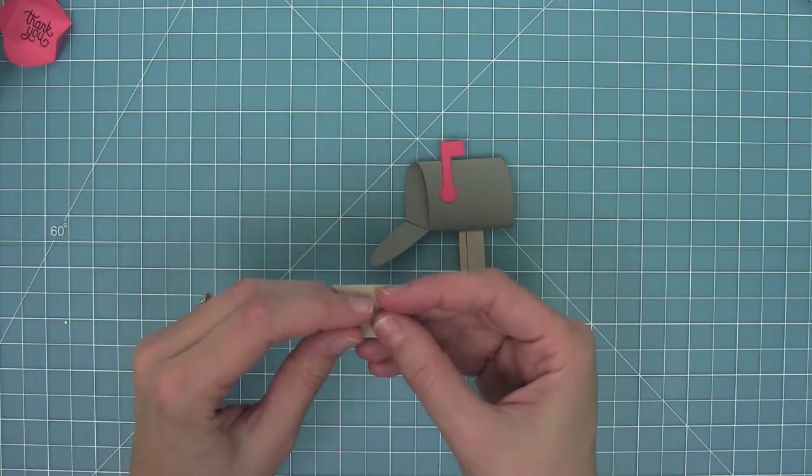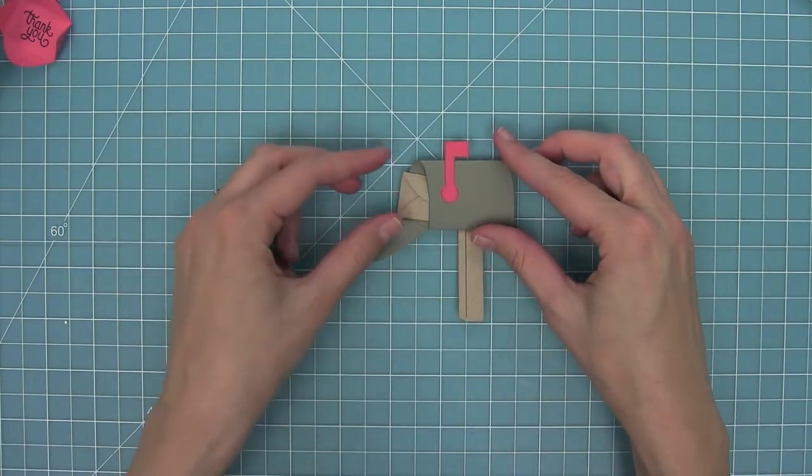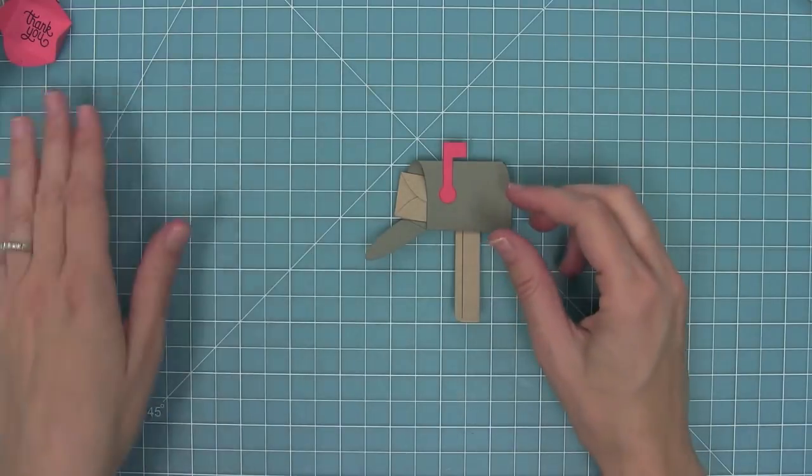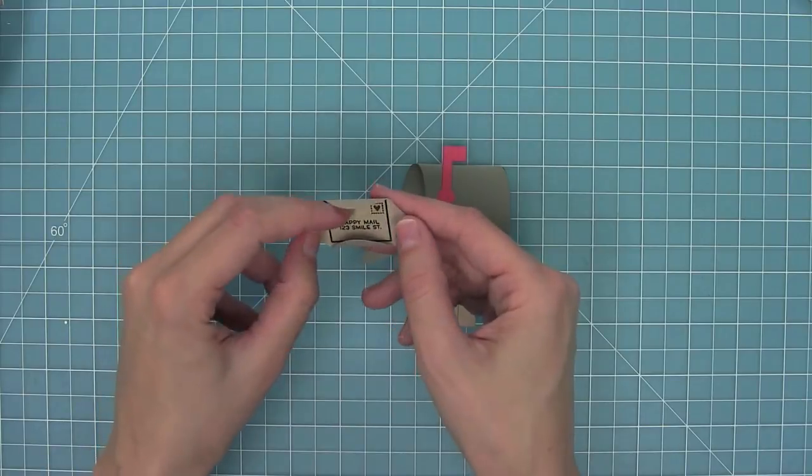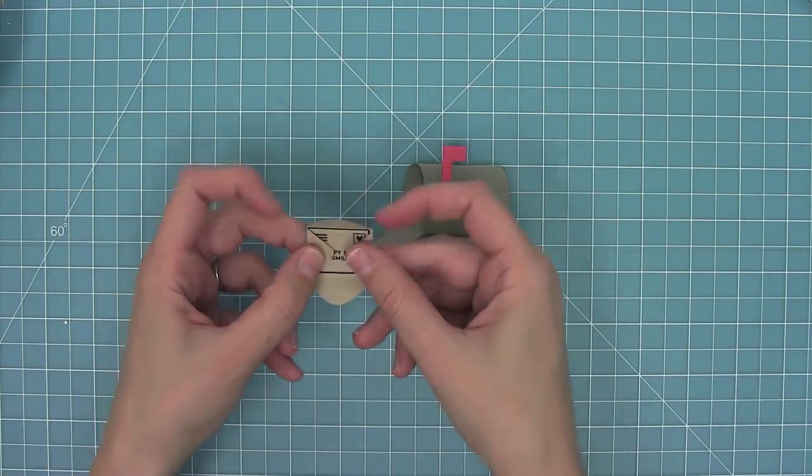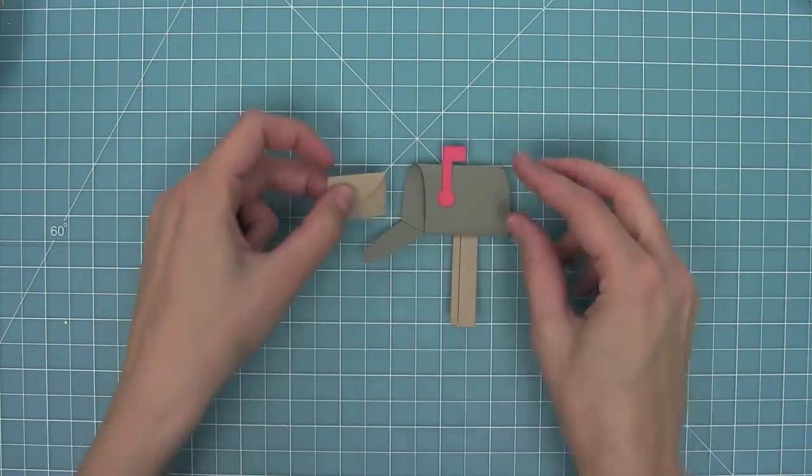Now with this happy mail envelope what I'm going to do is actually just close it like that and then tuck it in the mailbox and the mailbox will actually keep it closed for you. Then when the recipient pulls it out it opens up and they can see whatever message that you stamped inside which I just think is so adorable.